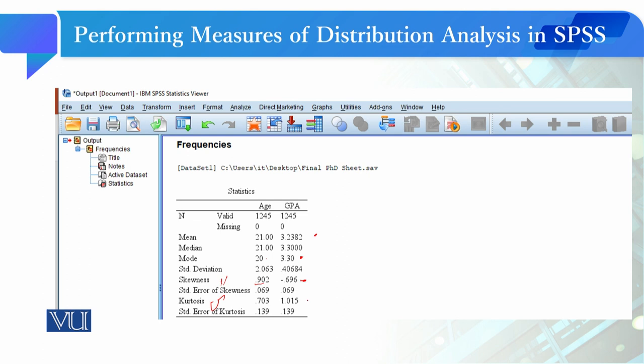The kurtosis value of 1.01 is almost equal to 1. We can say that this is an ideal fit. The maximum threshold value is 1, and this is normally distributed data as we can interpret.